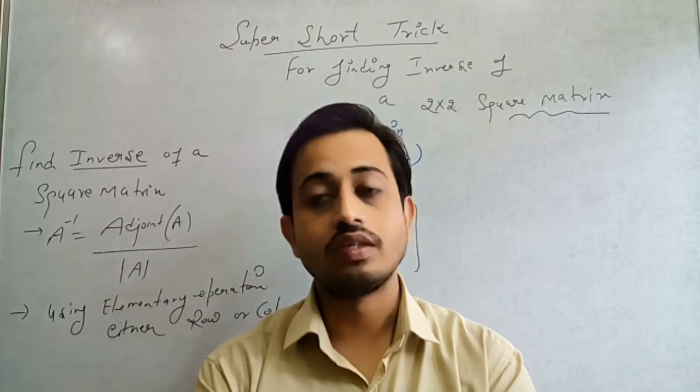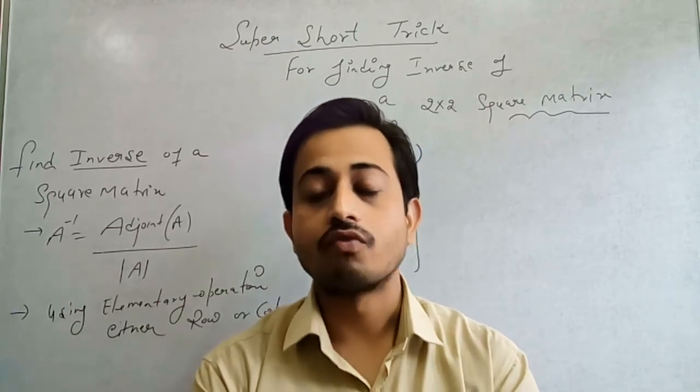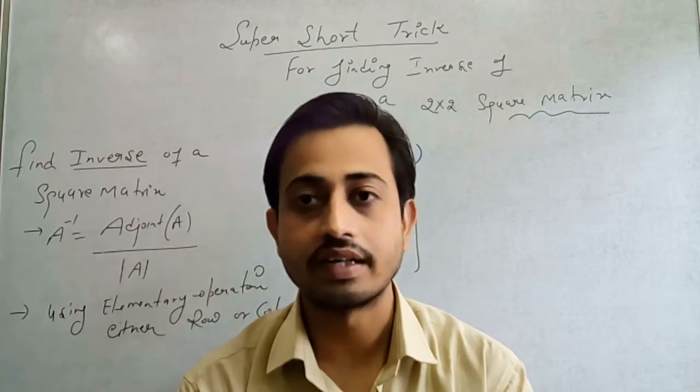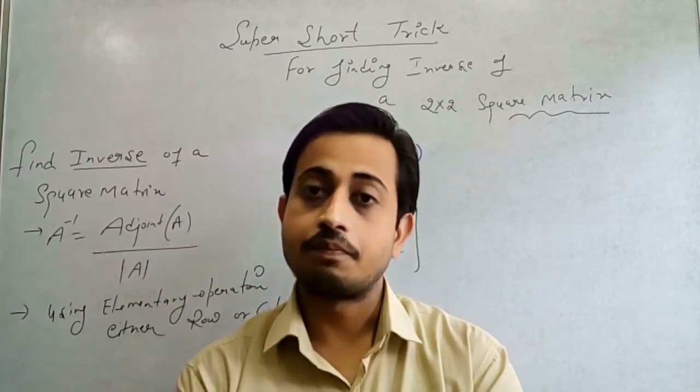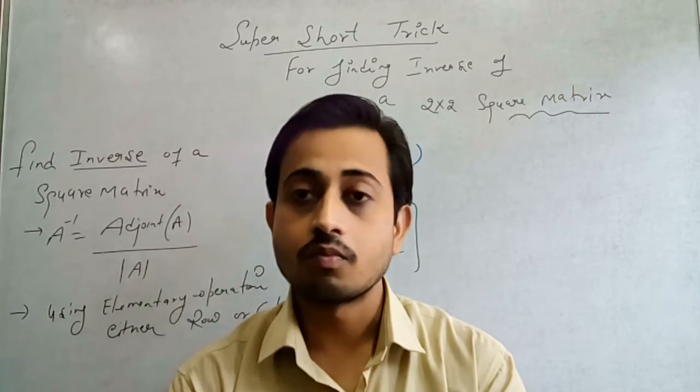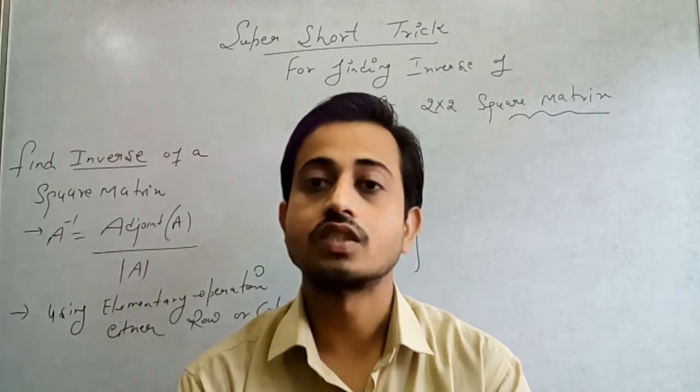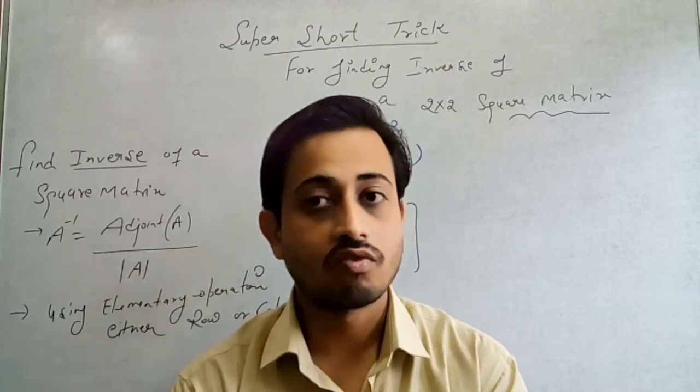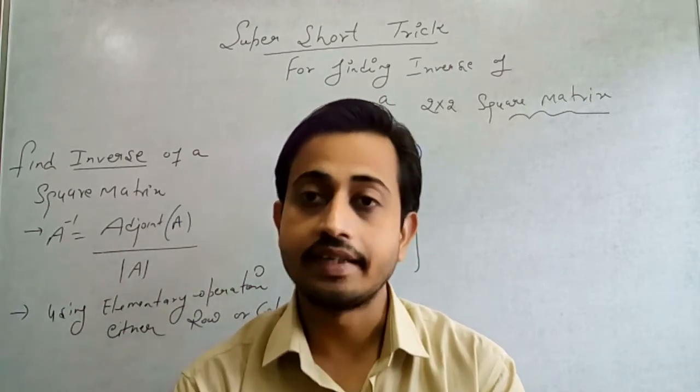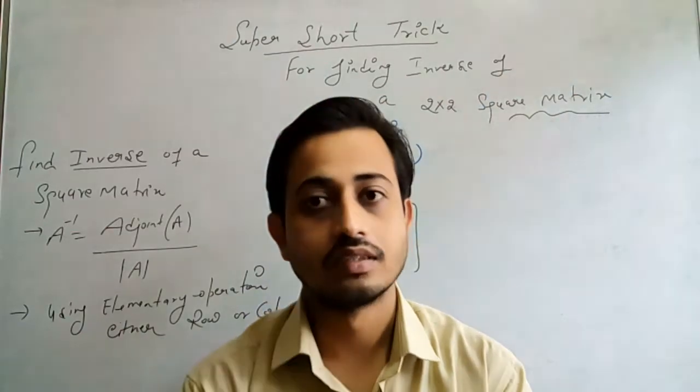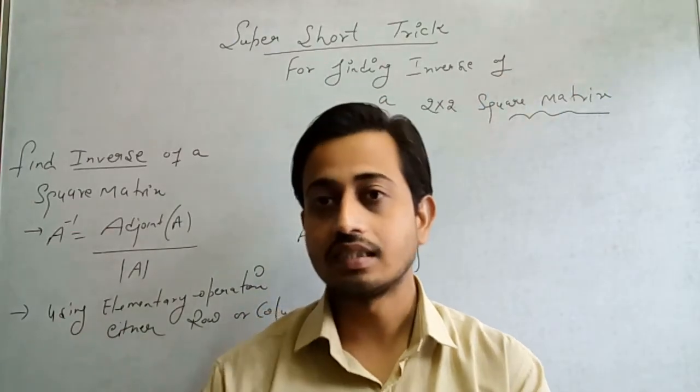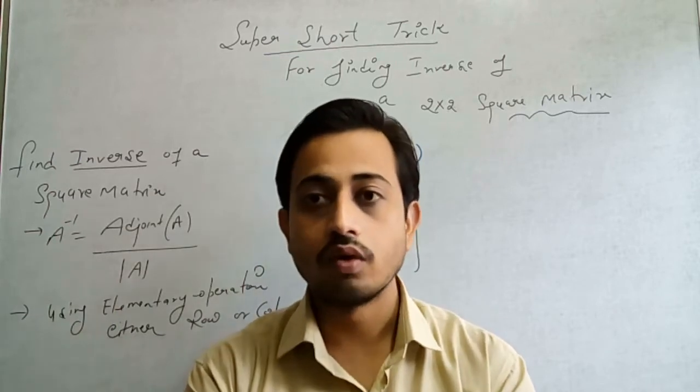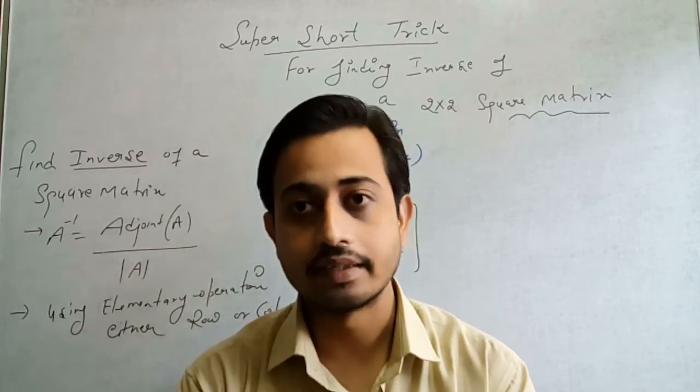We have to first calculate the cofactor of each element. Then we prepare a matrix of the cofactor elements. And then the step is to take a transpose of the cofactor matrix, which is called the adjoint of a matrix. Then we take the adjoint and divide the whole matrix by the determinant of the given matrix. By using these two formulas, we can calculate the inverse of a matrix.